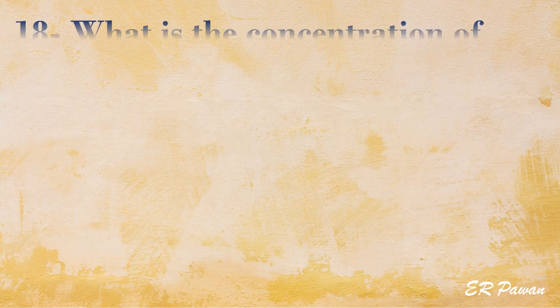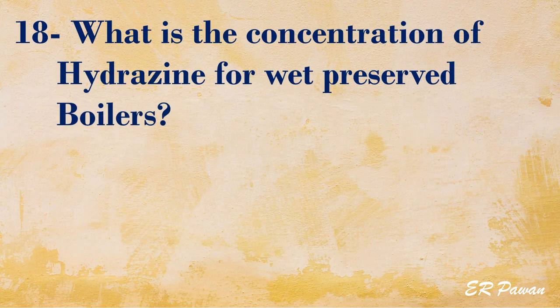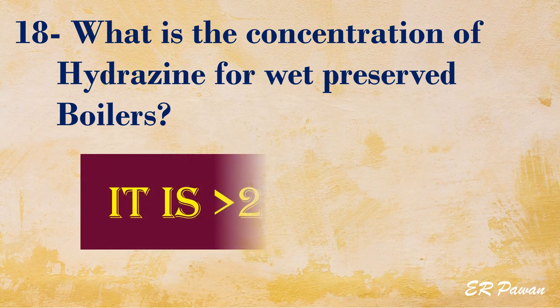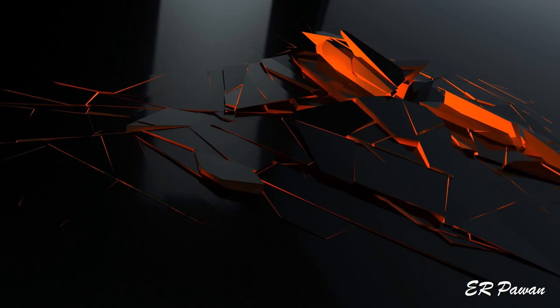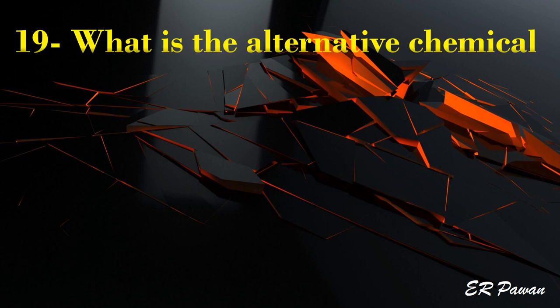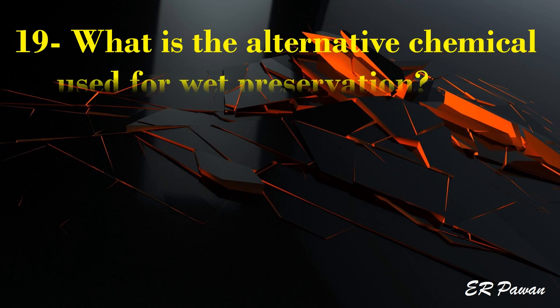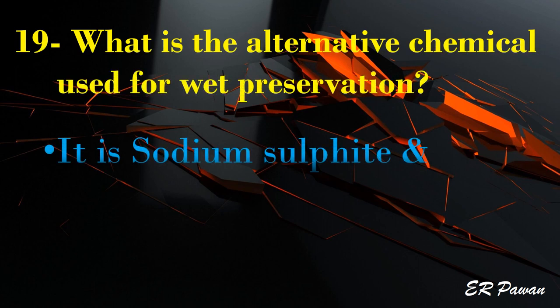Question 18: What is the concentration of hydrazine for wet preserved boilers? It is greater than 200 parts per million. Question 19: What is the alternative chemical used for wet preservation? It is sodium sulfite.